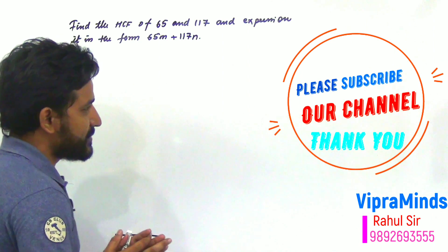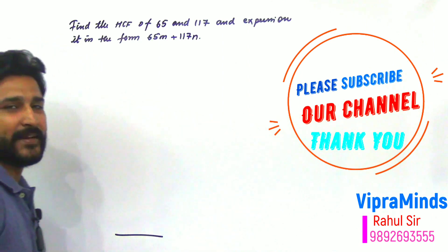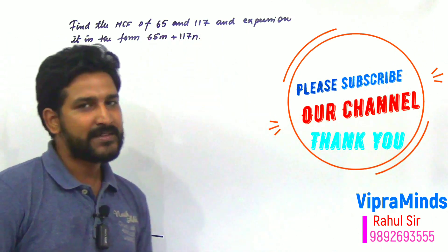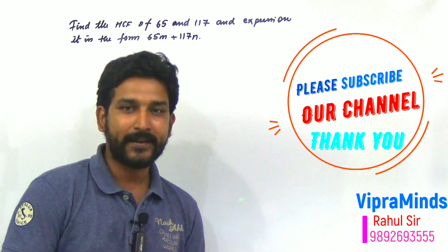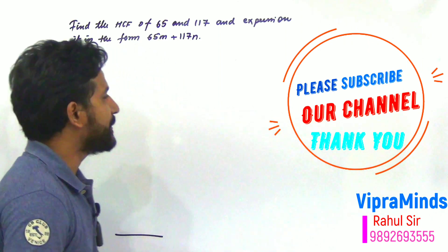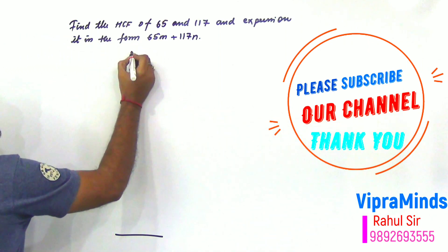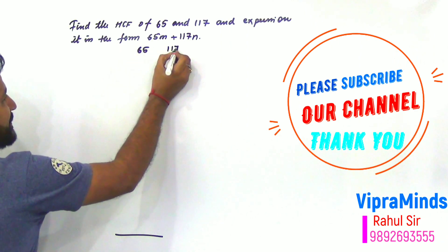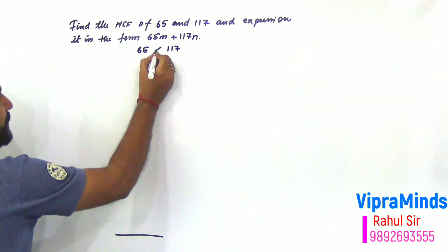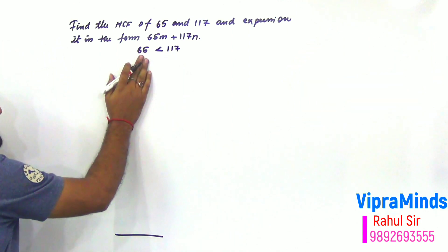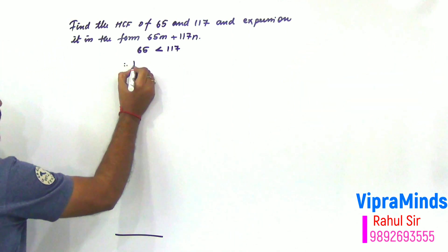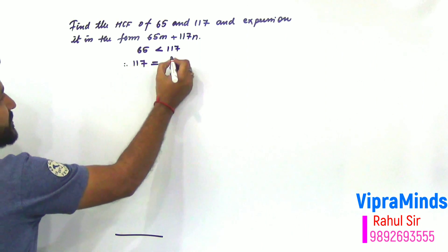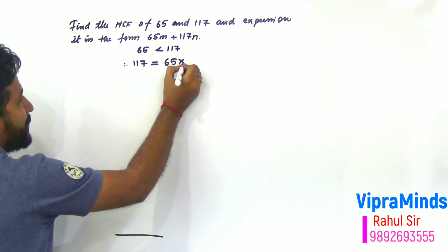We have seen in the last example, what are we going to do? 65 and 117 HCF calculated by Euclid's division algorithm. So, 65 and 117, which number is greater? 117. We take dividend and divisor. Therefore 117 is equal to 65 into...